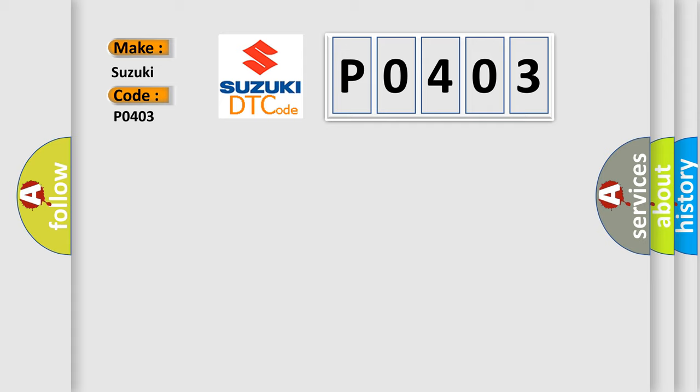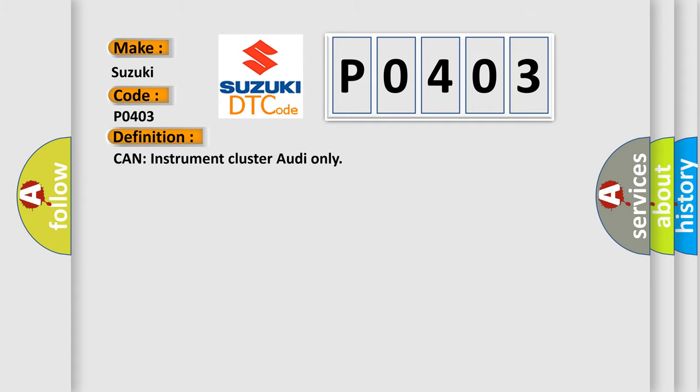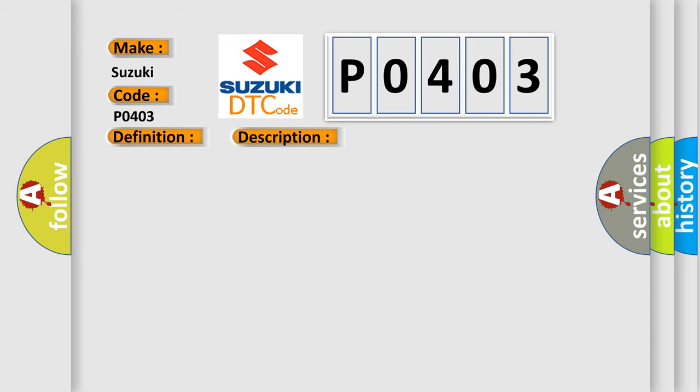The basic definition is: CAN instrument cluster — Audi only. And now this is a short description of this DTC code: Key on status — ambient temp from instrument cluster, no fault.